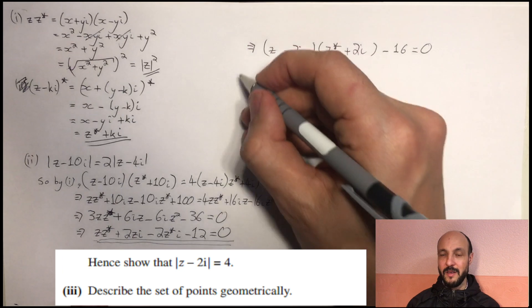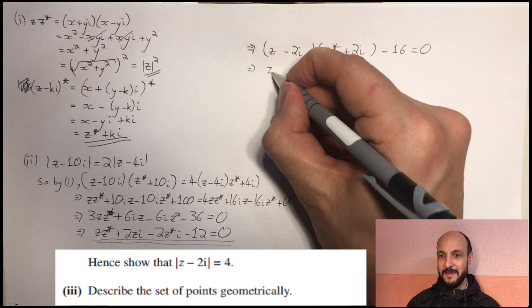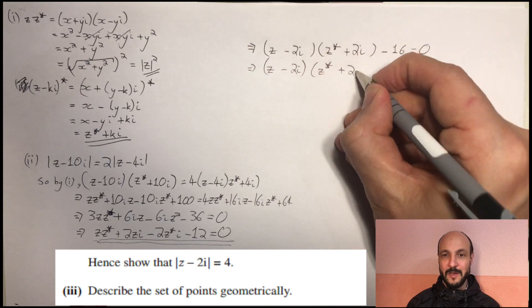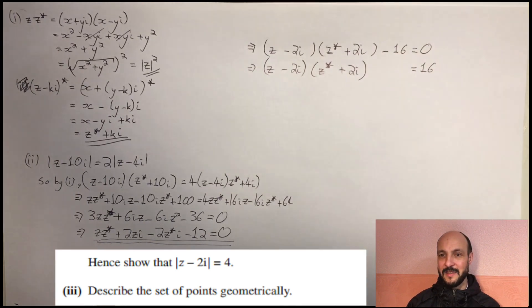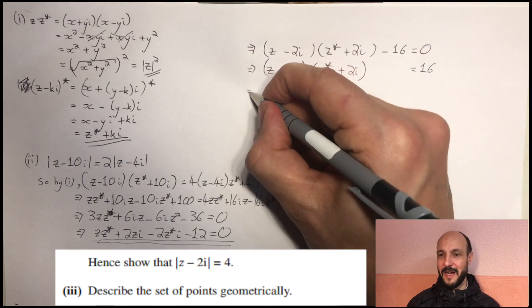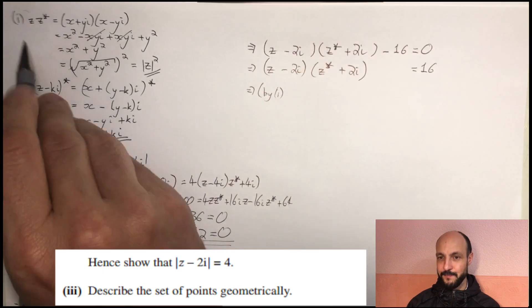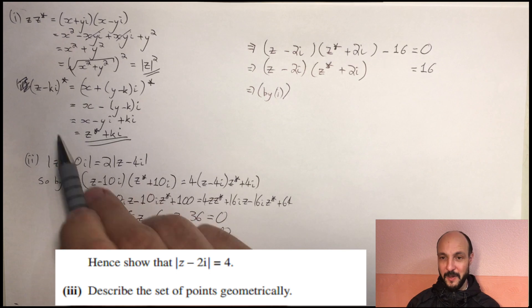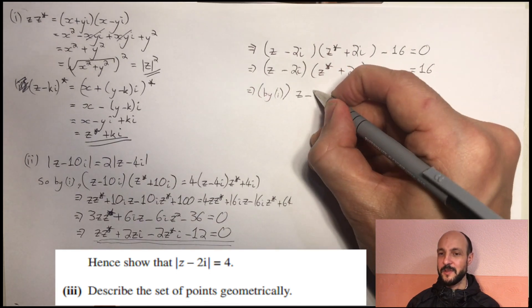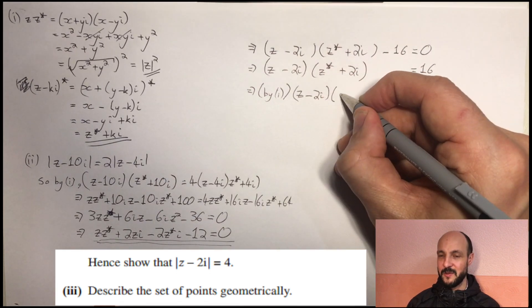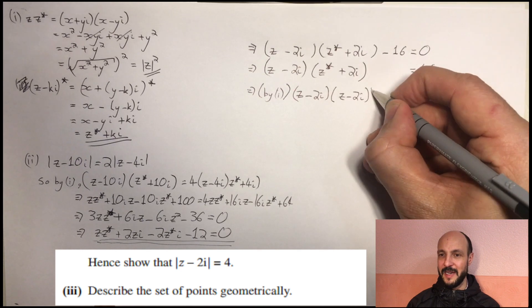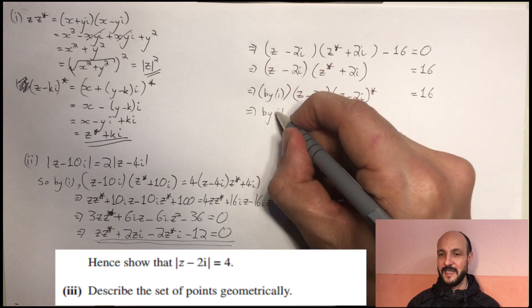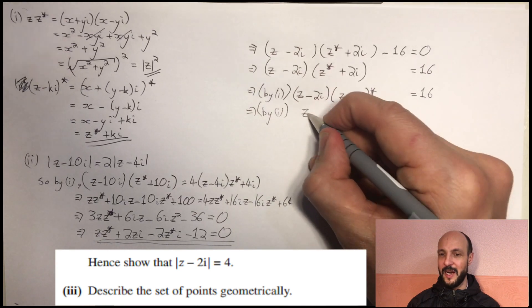Now, one of our part 1 items tells us z minus 2i times by z star plus 2i is equal to z minus 2i times by z minus 2i star, which we can, again, using the first part of 1 this time, this is equal to the mod of z minus 2i squared. So we've got the mod of z minus 2i squared is equal to 16. If we take the square root of both sides, we've got mod of z minus 2i equals 4.